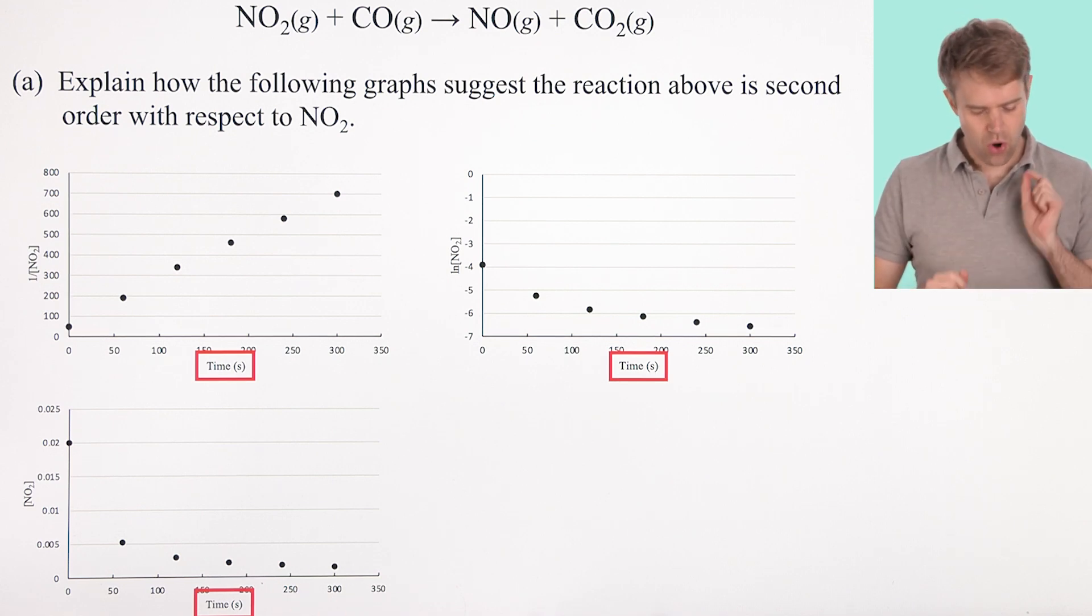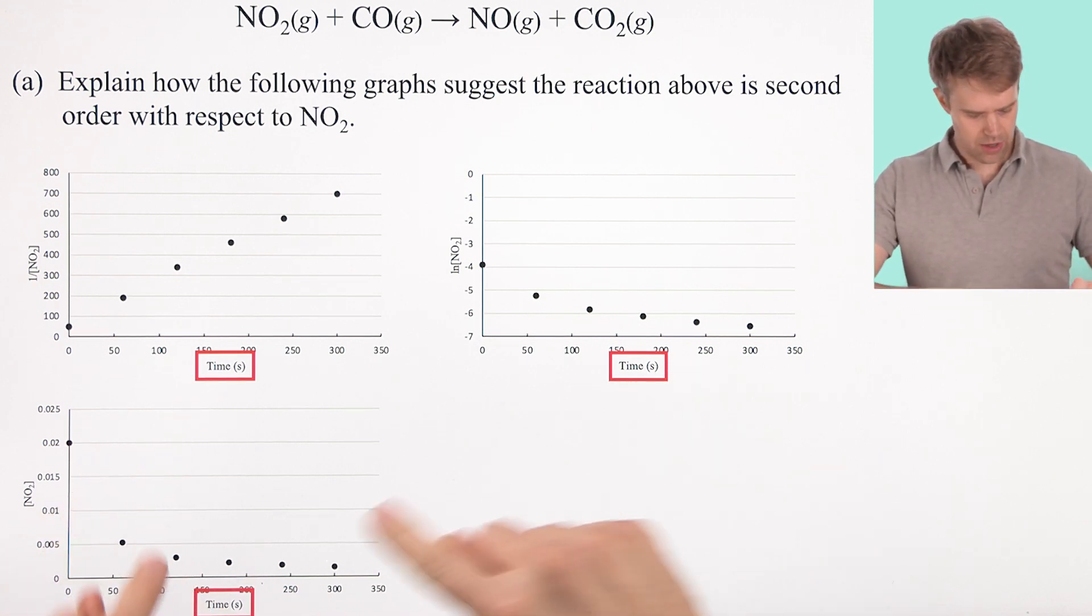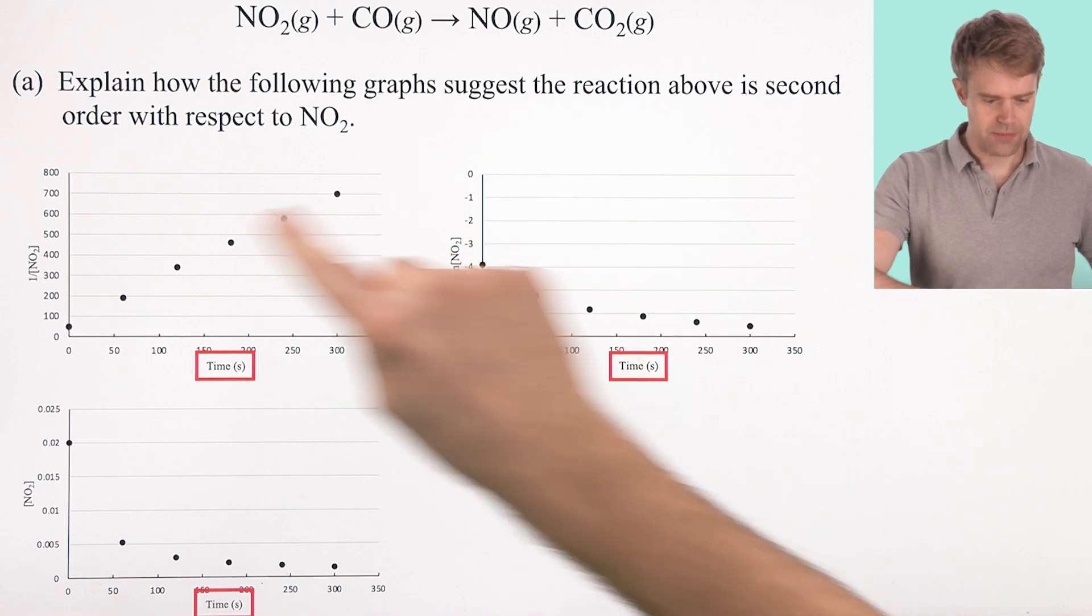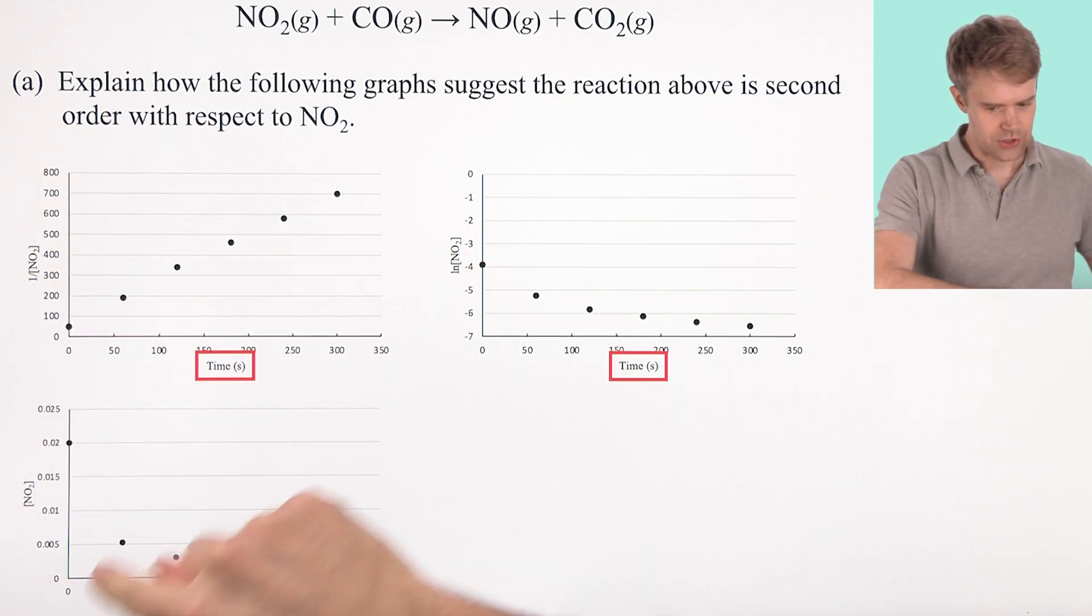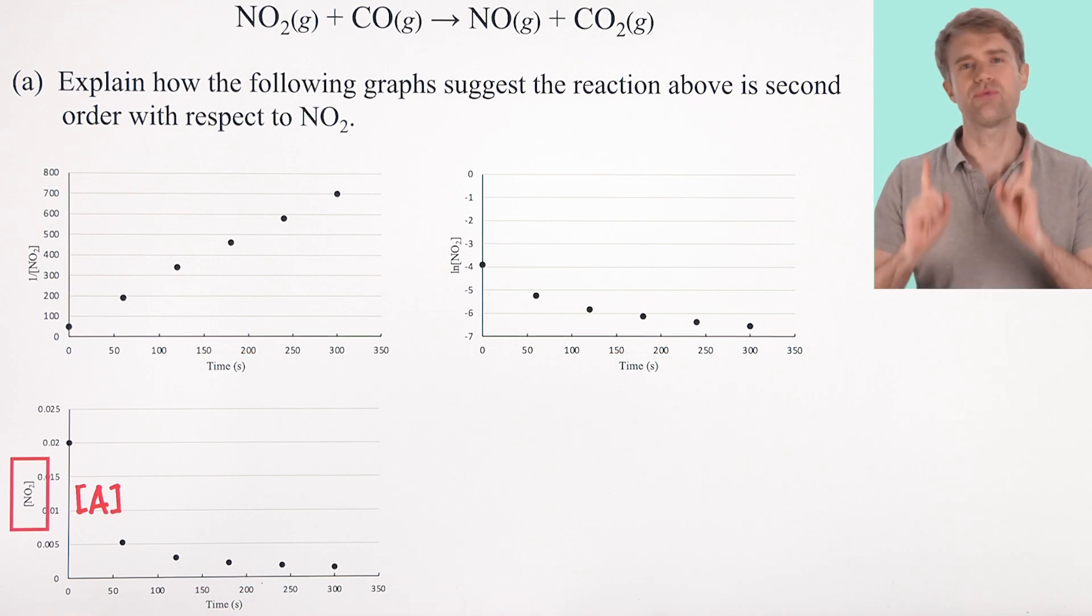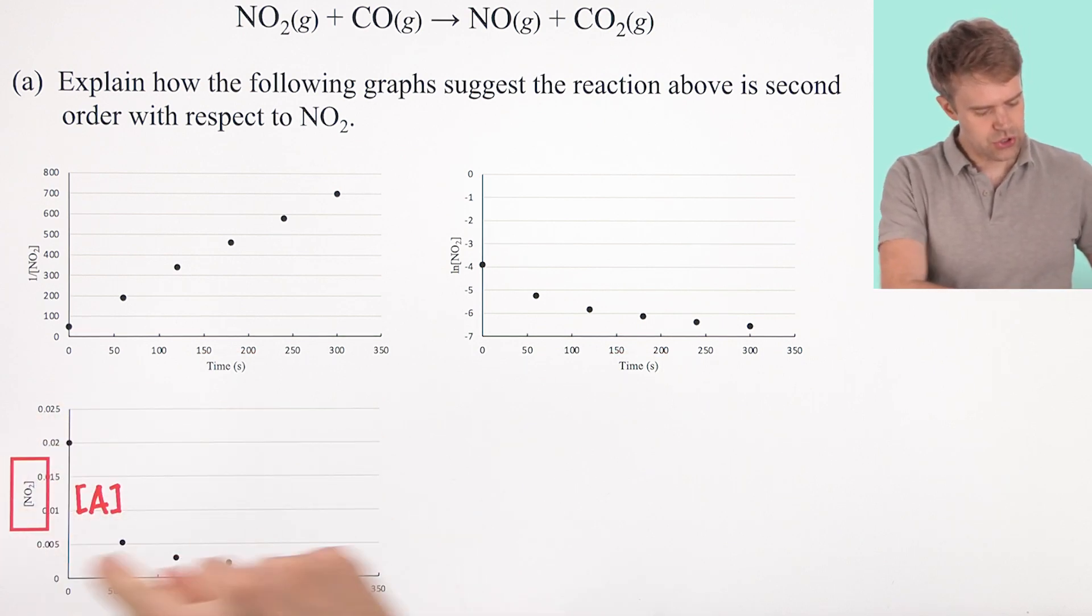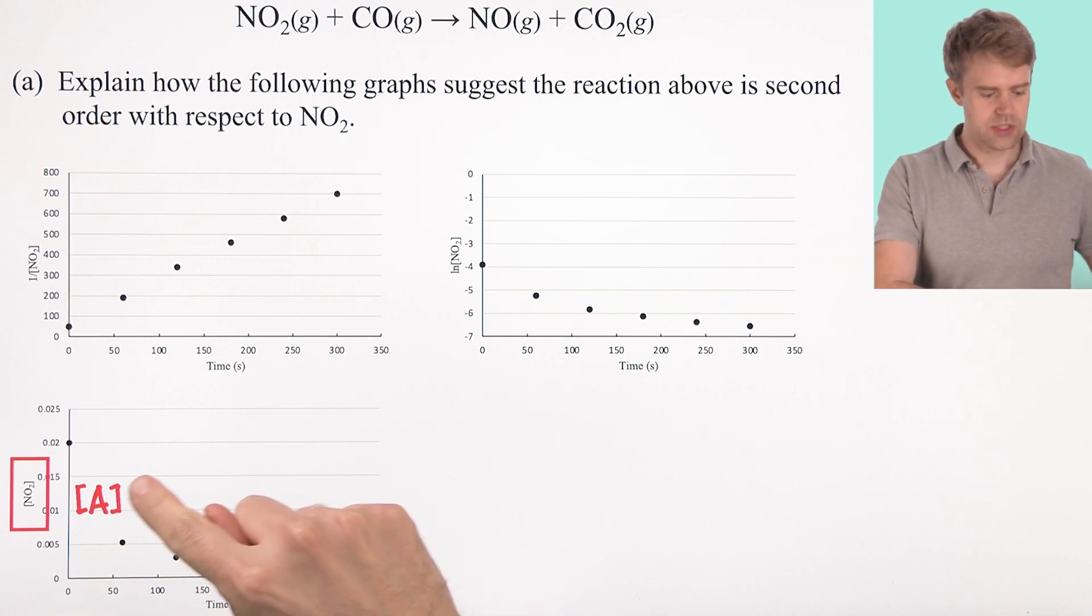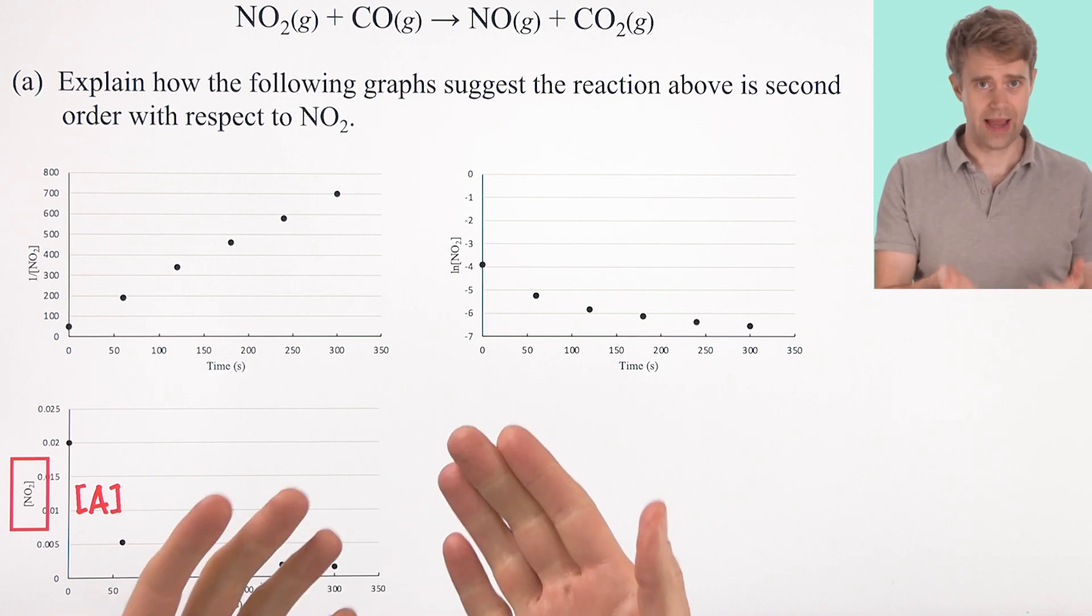These type of kinetics graphs always have time on the x-axis, right here, it's in seconds. But the y-axis is going to be a little different for each graph. Basically, there are three possibilities. The first is the most straightforward, that's what we have here, time versus the concentration of the reactant.